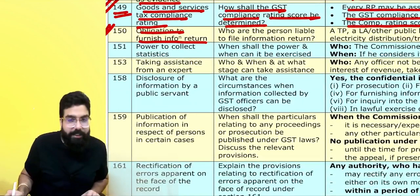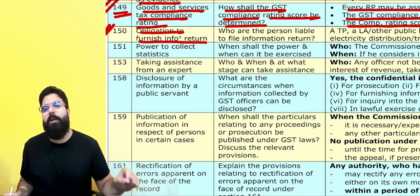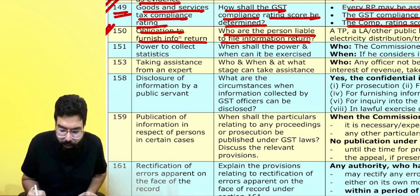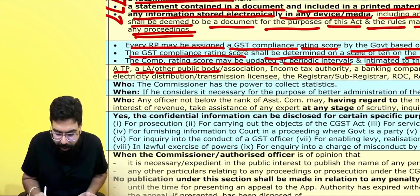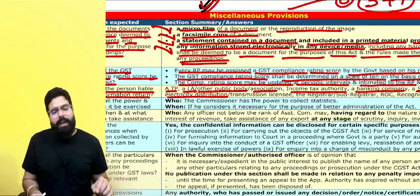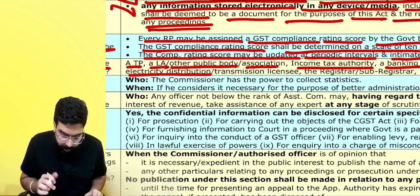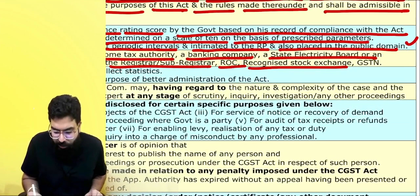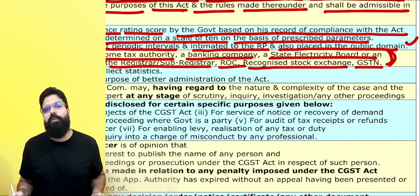Section 150 deals with the obligation to furnish information return. Exam question: Who are the persons liable to file information return? A taxable person, local authority, other public body or association, income tax authority, banking company, state electricity board, electricity distribution or transmission licensee, registrar or sub-registrar, ROC, recognized stock exchange, and GSTN — all these persons must furnish information returns.